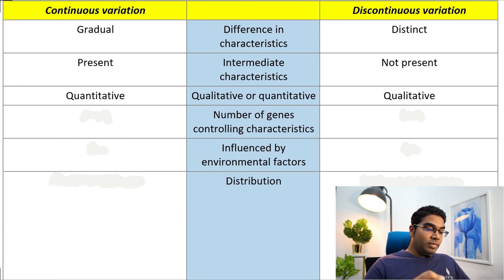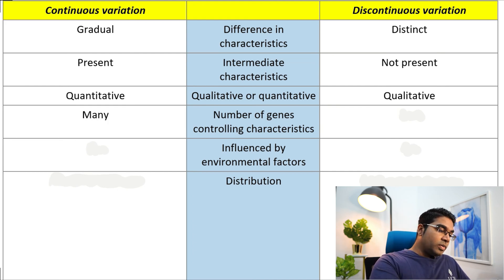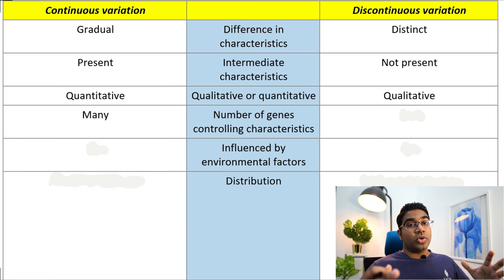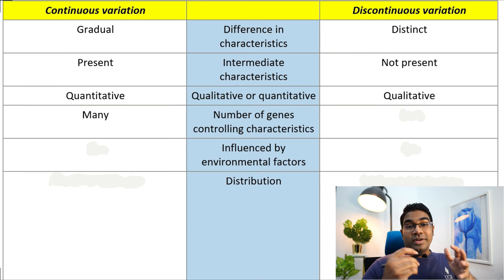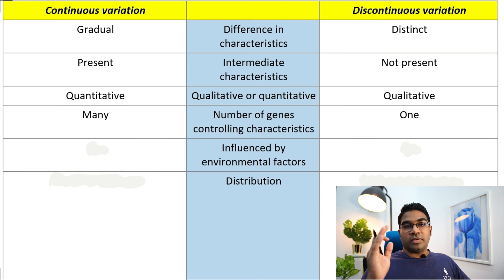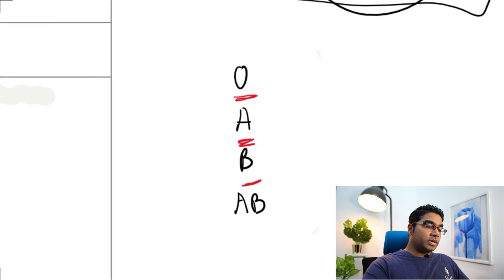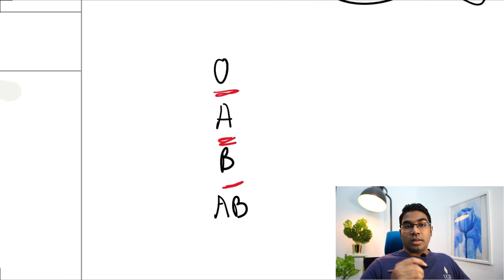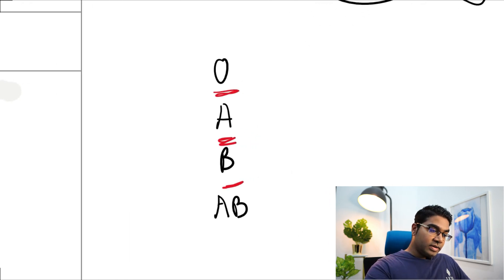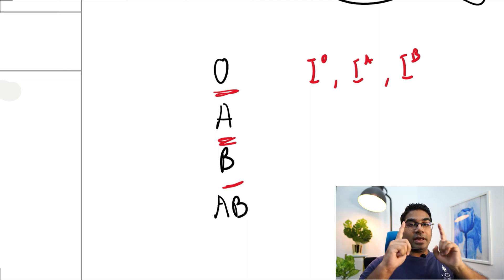In continuous variation, the number of genes controlling the characteristic is usually more than one. There are usually many genes controlling characteristics such as height and weight. Whereas for discontinuous variation, there is usually only one gene responsible for the characteristic. For example, blood group is controlled by a single gene that has three alleles. This is controlled by one gene.